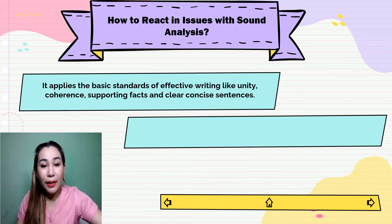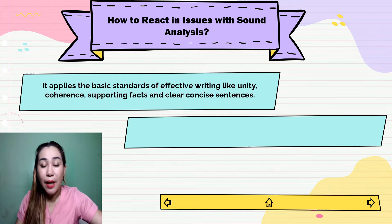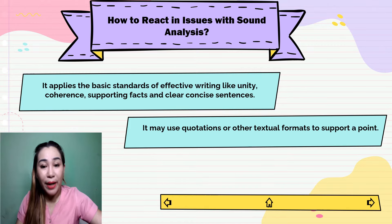Third, it applies the basic standards of effective writing like unity, coherence, supporting facts, and clear, concise sentences. Unity is the idea that all parts of the writing work to achieve the same goal, while coherence means establishing a relationship between the ideas presented. Your reaction must also be supported by quotations or other textual formats that will support a point. Using coding, paraphrasing, and referencing will challenge or support your arguments.